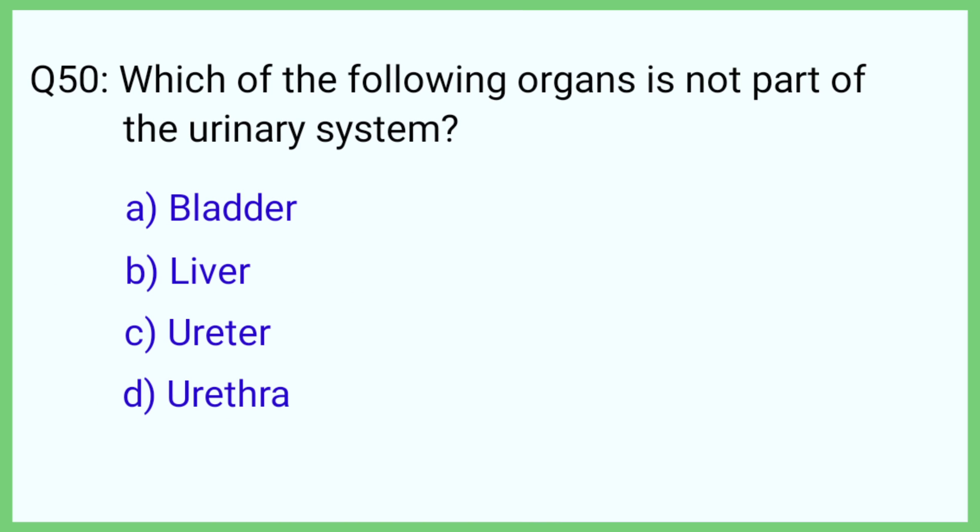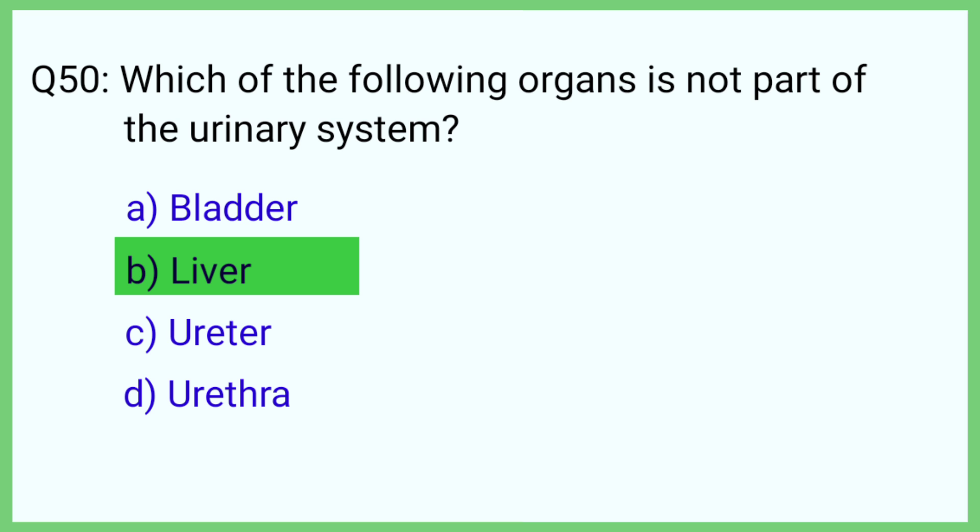Question number 50. Which of the following organs is not a part of the urinary system? The correct answer is option B: Liver.